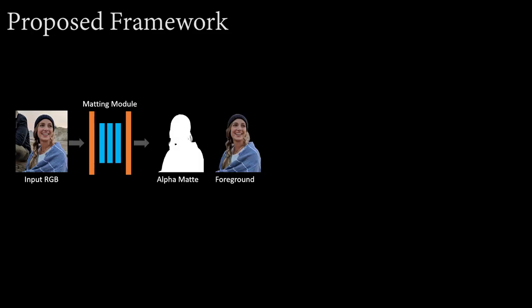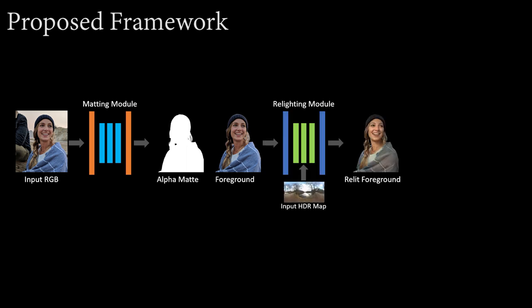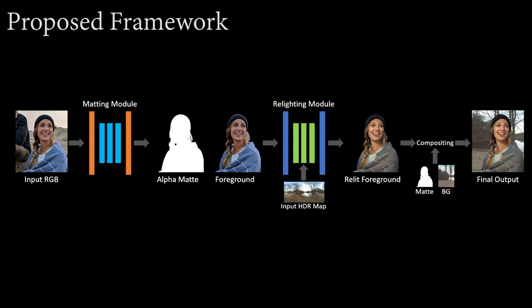Starting from an input image, our learning based matting module infers an alpha matte and foreground color. Next, our relighting module takes an input HDR lighting environment and relights the foreground to match the target scene. The relit subject is then composited into a background extracted from the lighting panorama with consistent illumination.